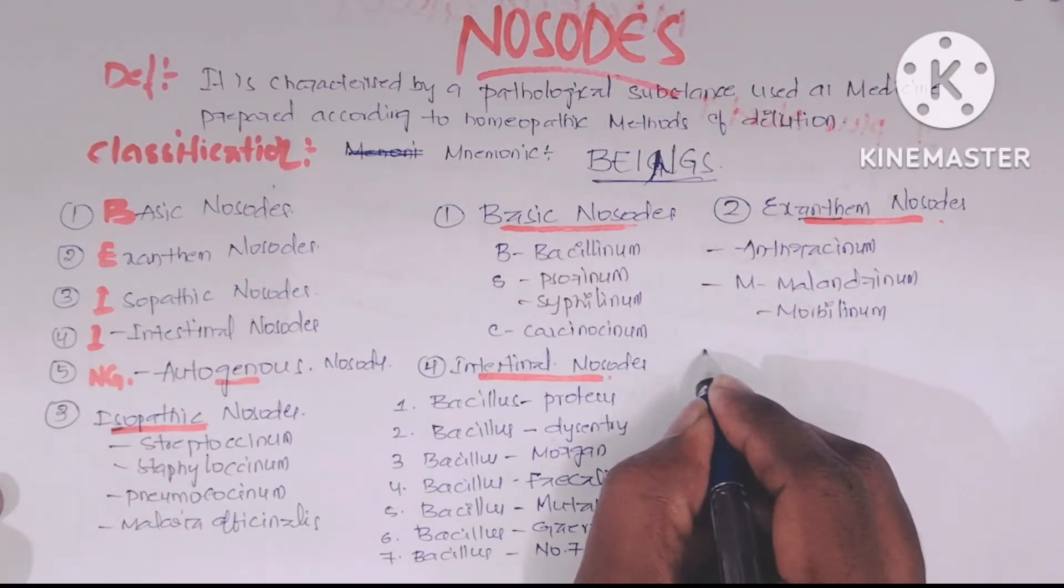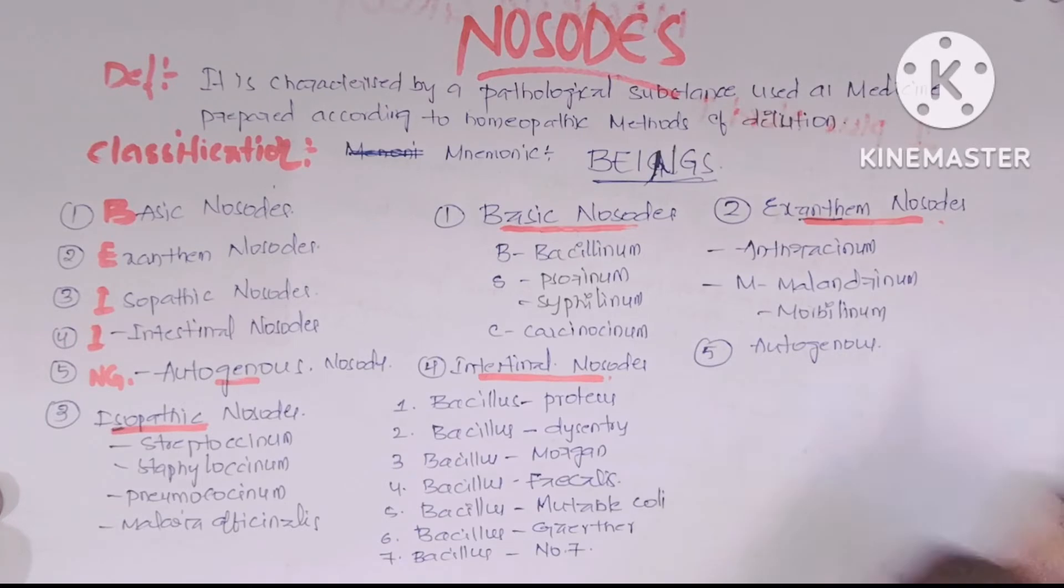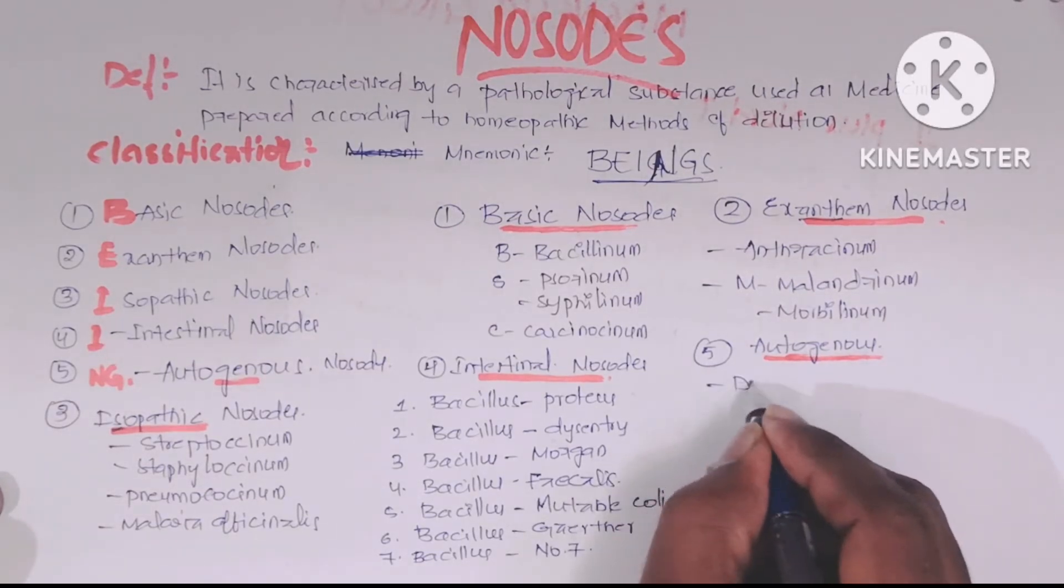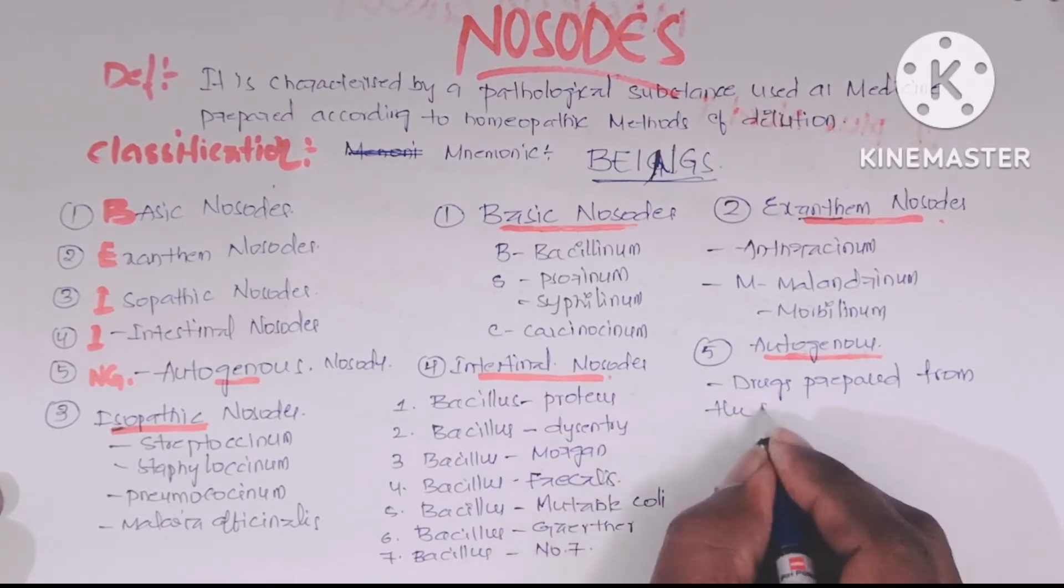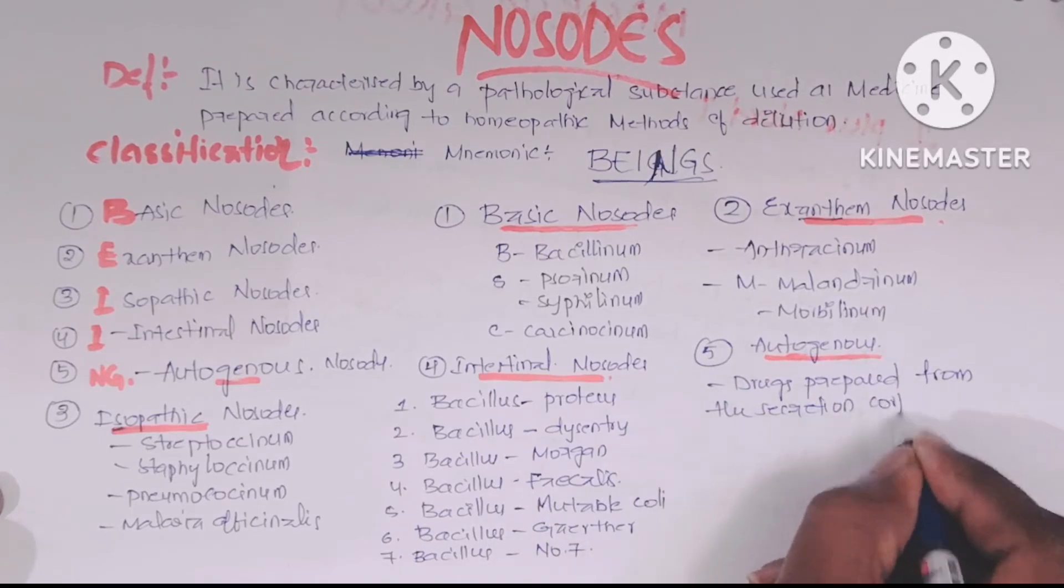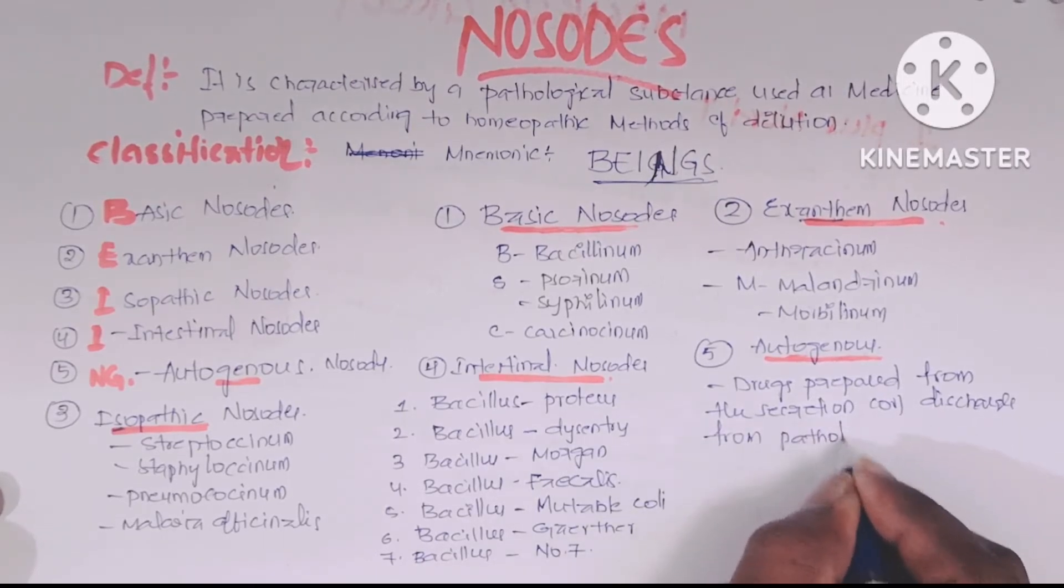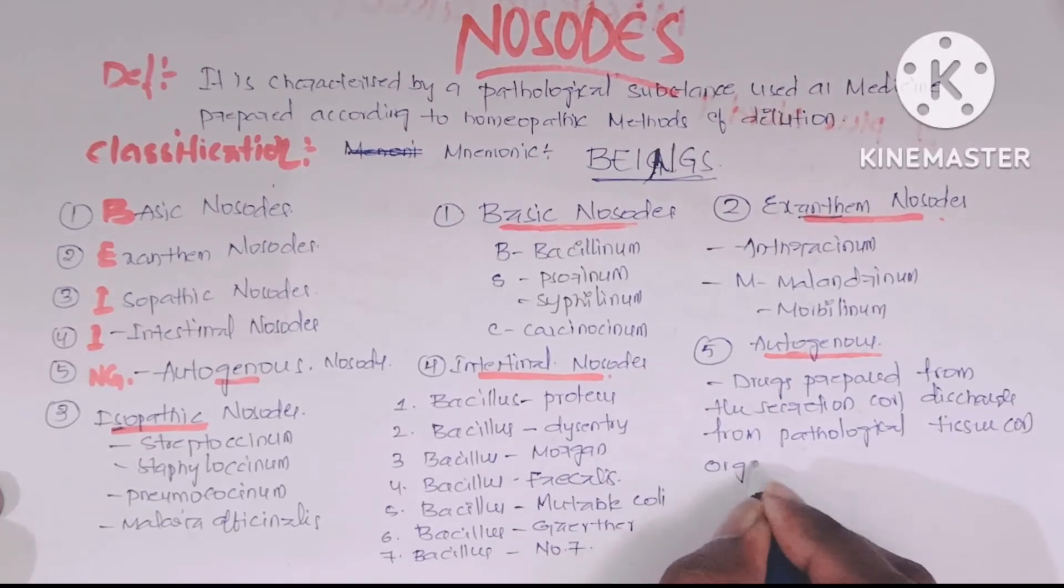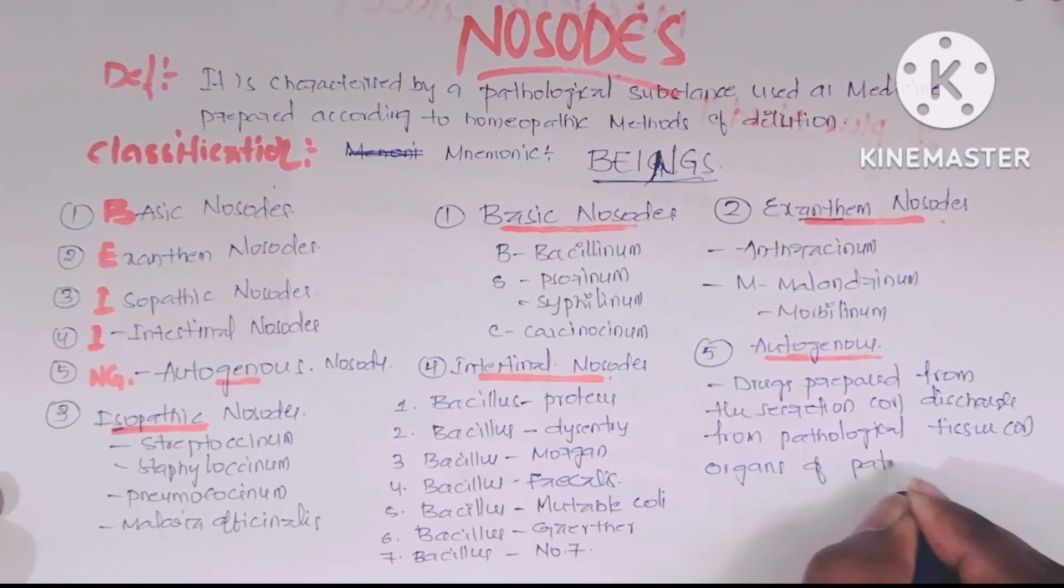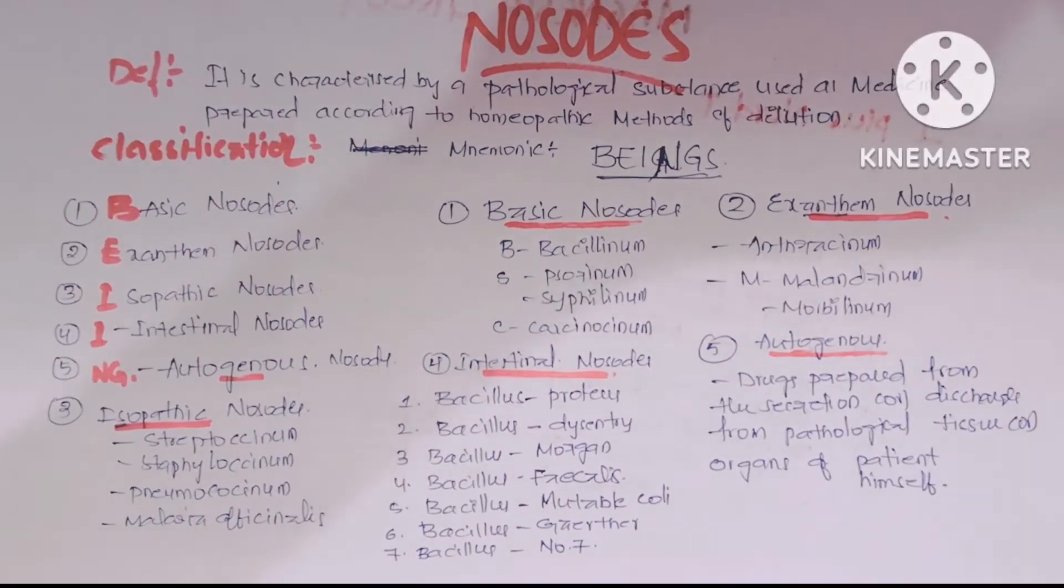Coming to the last one, Autogenous nosodes. These are nosode drugs prepared from the secretion or discharge from pathological tissue or organs of the patient himself. These drugs are prepared from the pathological condition of the patient only.